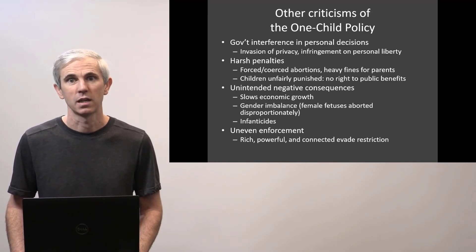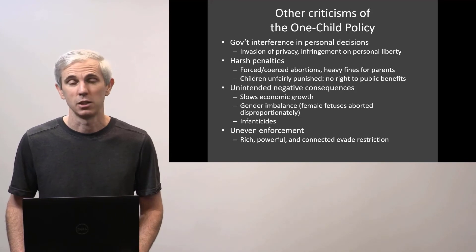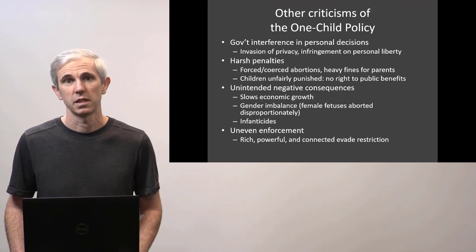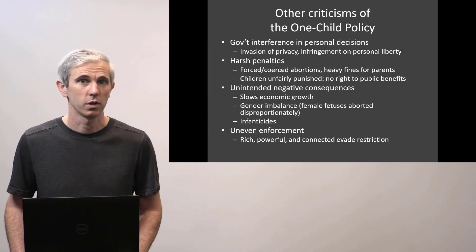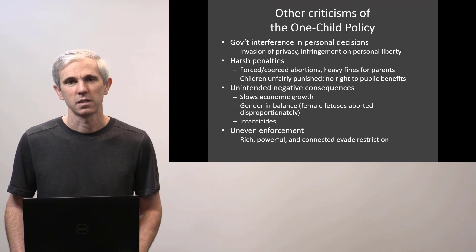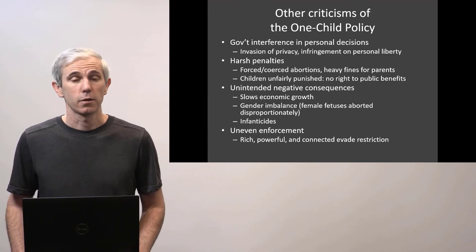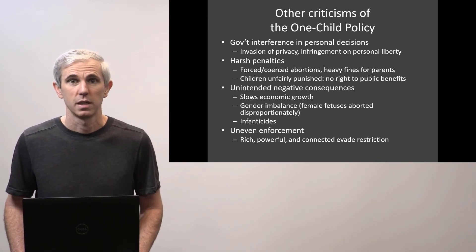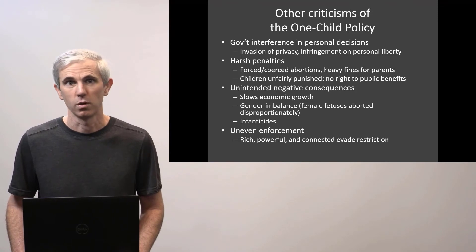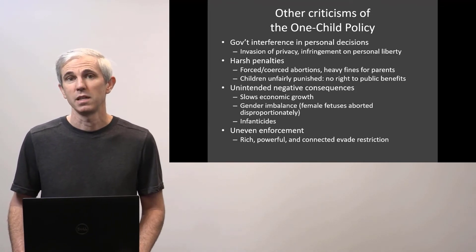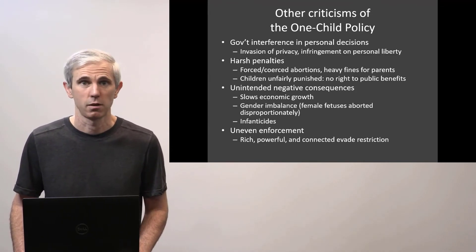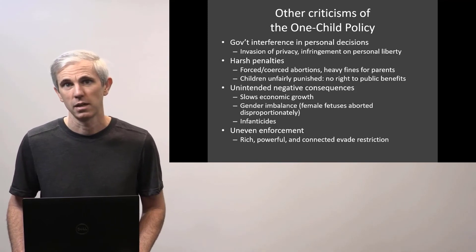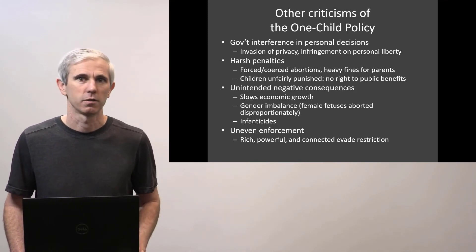Other criticisms of the one-child policy from inside as well as outside China were that it had unintended negative consequences. It actually slowed economic growth and exacerbated a gender imbalance — prospective parents would determine the gender of the fetus and decide to abort if it was a girl. There were also infanticides of unwanted girls. Another criticism was not just that the policy itself was unfair, but that it was unfairly enforced, disproportionately affecting the poor. Whereas if you were rich or had means, you could just flout the policy — have a second, third, or fourth child — pay the fine and get off scot-free.